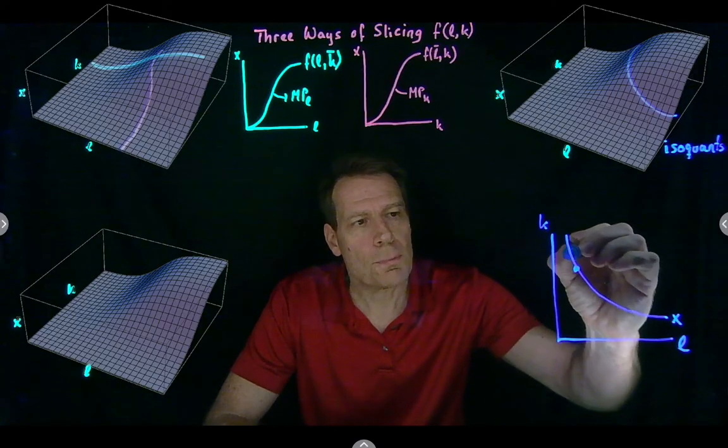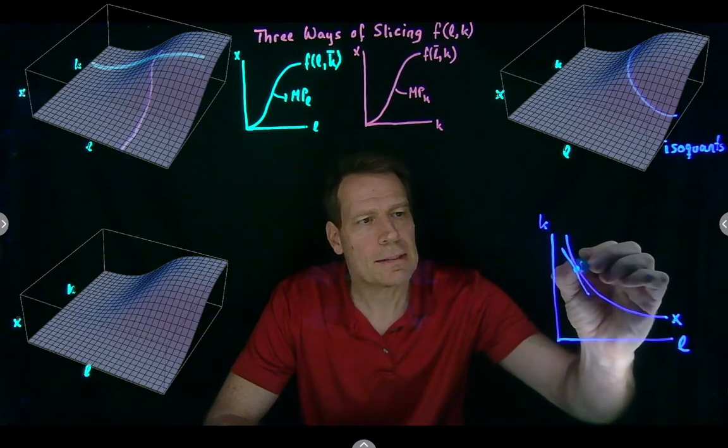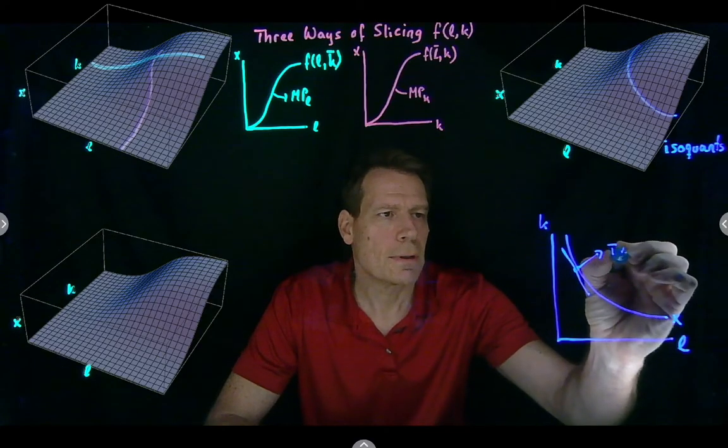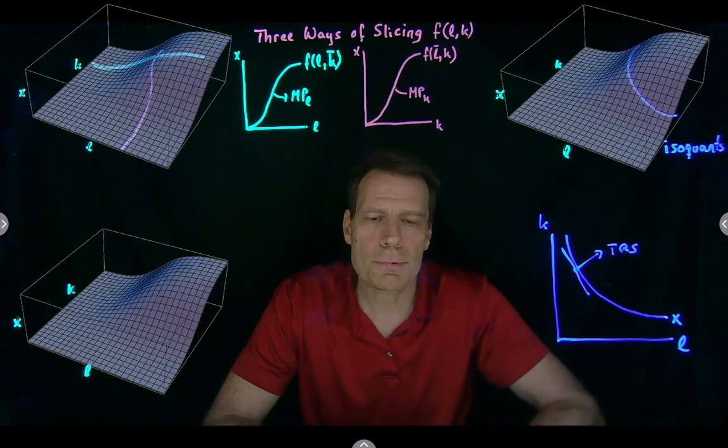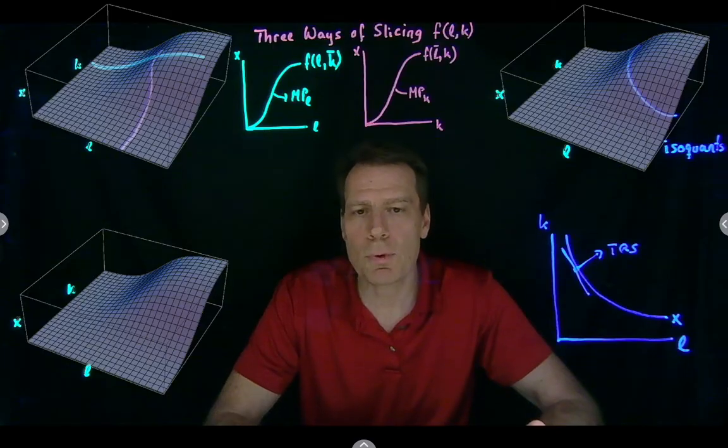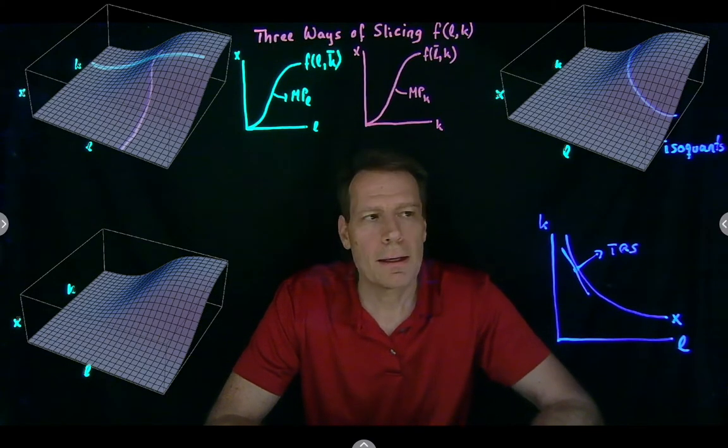We then looked at the slope of this, and said, well, that's the technical rate of substitution. The rate at which we can substitute capital for labor, and continue to produce the same quantity as before.